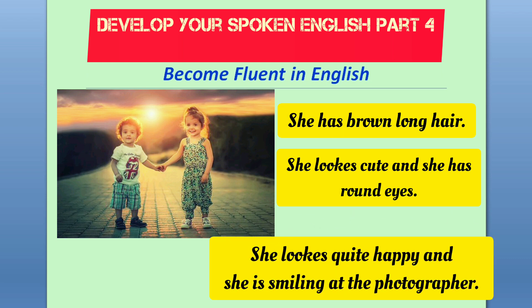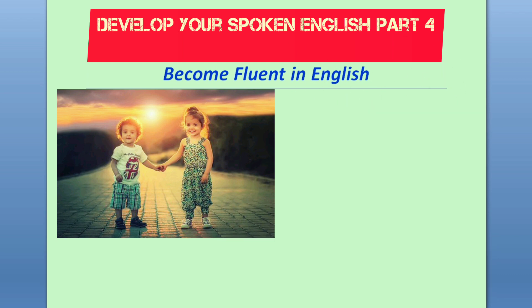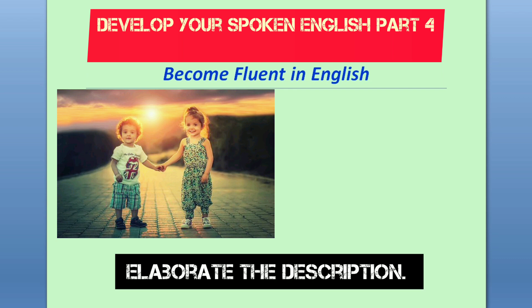The girl looks quite happy and she is smiling at the photographer. In the background, we see a scenery showing the setting sun. You can further add that it is quite cloudy and it is sunset time, so the photograph is taken in a golden light as the sun is setting. This is how you describe a picture using both tenses.